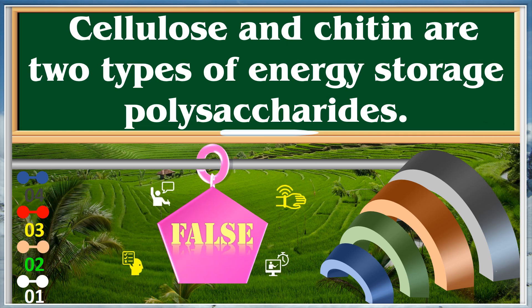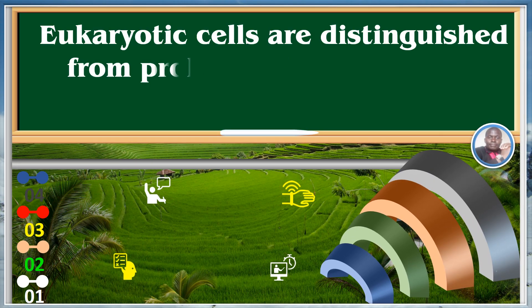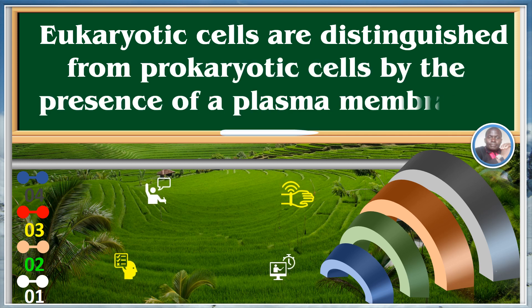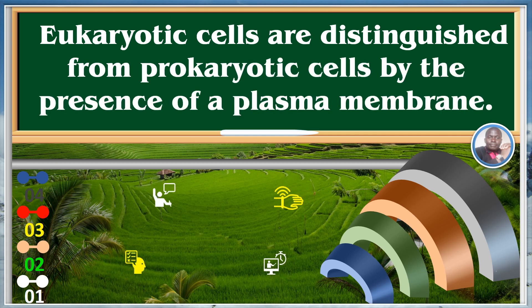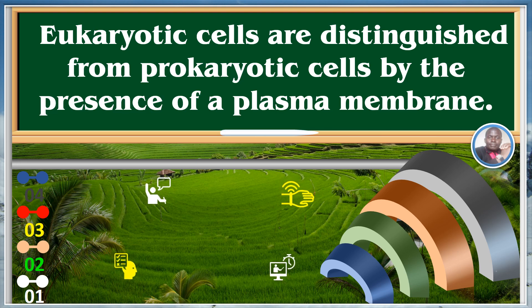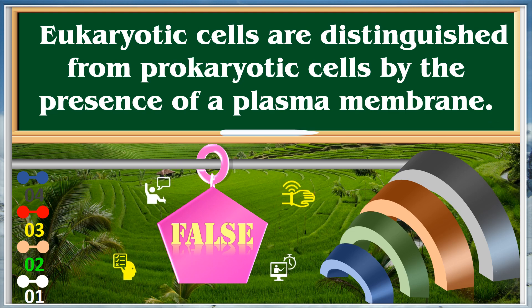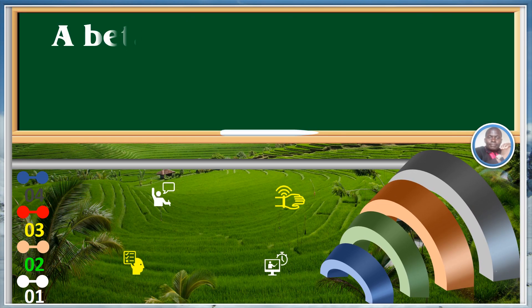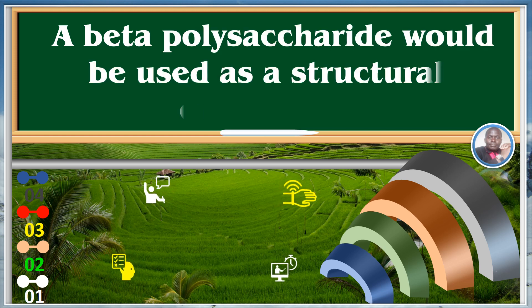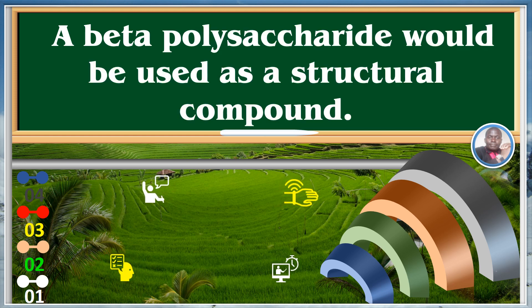Eukaryotic cells are distinguished from prokaryotic cells by the presence of a plasma membrane. False. A beta polysaccharide would be used as a structural compound. False.